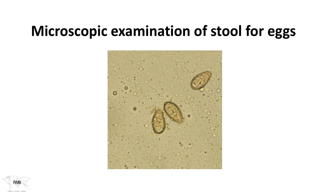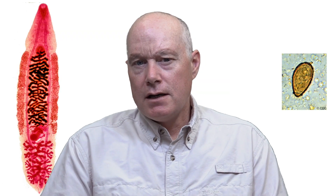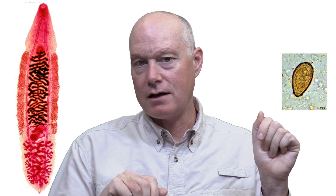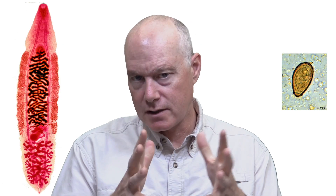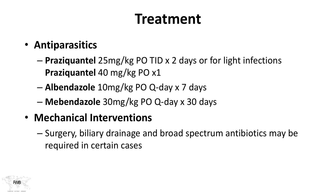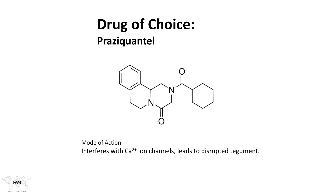These are just small eggs visible in stool. For treatment, there are both antiparasitic and mechanical approaches. Praziquantel for two days is the drug of choice — light infections may only need one day. Albendazole for a week is an option, as is mebendazole, though mebendazole requires about 30 days of treatment. Mechanical interventions may be needed due to obstruction and narrowing — surgery or biliary drainage. When a secondary bacterial infection has developed, antibiotics are also required. Praziquantel is preferred as a one-to-two day approach and works by interfering with calcium ion channels.